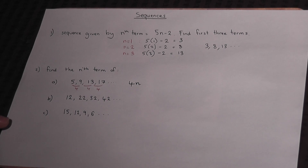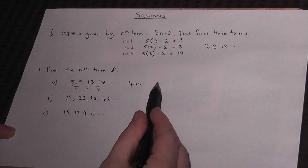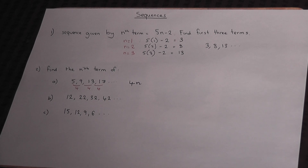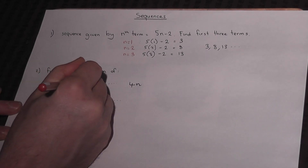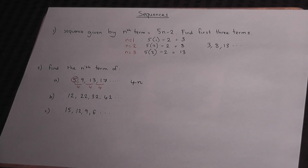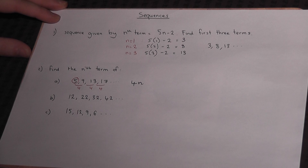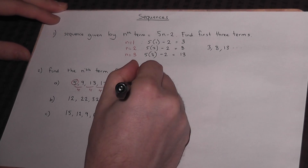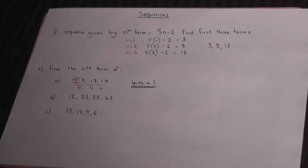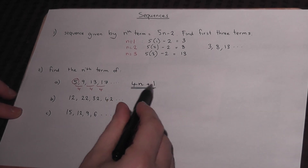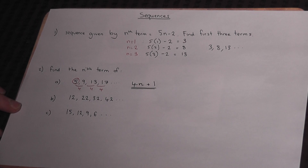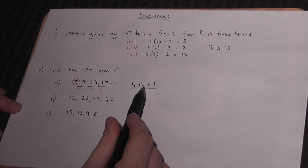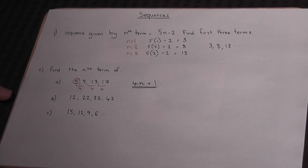However, it's not just 4n, because that gives the sequence 4, 8, 12, 16, 20. There's actually a number added after this. You look at the first term, which is 5, and add or subtract to go from 4 to 5 — you just add 1. So the nth term is 4n plus 1. To check: if n equals 1, 4 times 1 plus 1 equals 5; if n equals 2, 4 times 2 plus 1 equals 9; if n equals 3, 4 times 3 plus 1 equals 13. That method works.